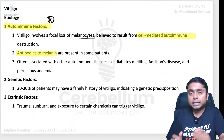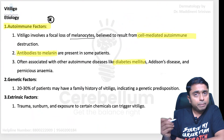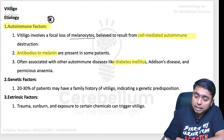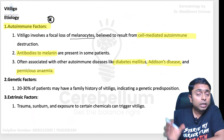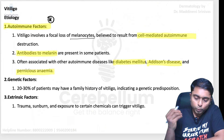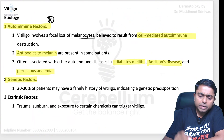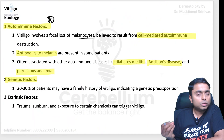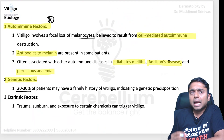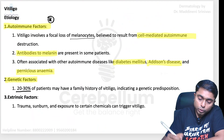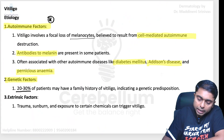Vitiligo is often associated with other autoimmune conditions such as type 1 diabetes mellitus, Hashimoto's thyroiditis, Addison's disease, and pernicious anemia — these associations are very important. Regarding other factors, genetics are also associated; some genes are linked to vitiligo and up to 20 to 30 percent of patients may have a genetic component.